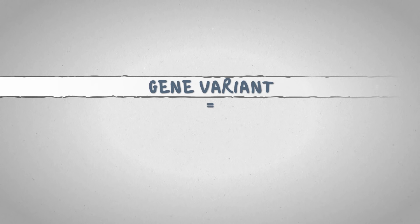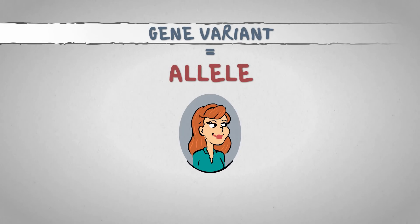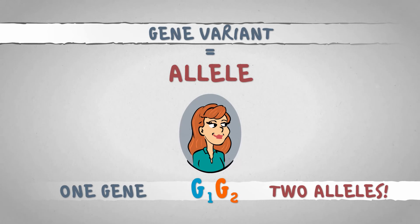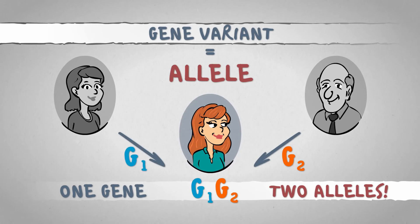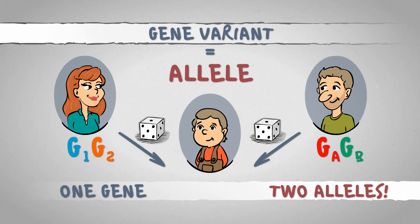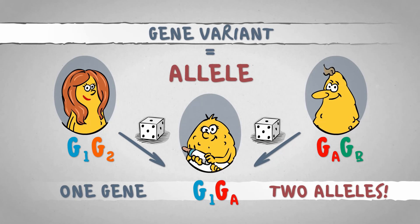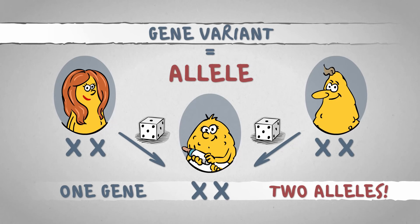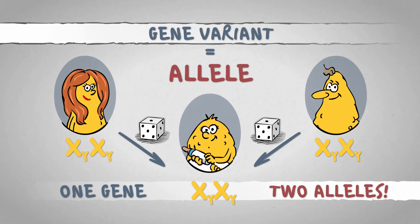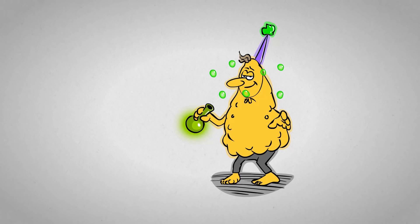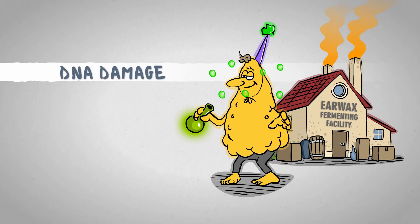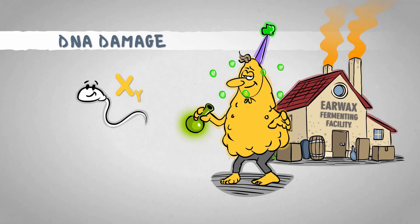Variants of the same gene are called alleles in genetics, and most multicellular life forms carry two alleles of each gene in their genomes — one from the father and one from the mother. When they reproduce, they randomly pass one allele onto their offspring within their gametes. This is no different in LORPs, but the yellow individuals carry two of the same X-allele, namely the LORP-melanine producing yellow variant. Booger LORP's dad, however, had a wild New Year's party in his buddy's earwax fermenting facility where he drank from a bottle labeled "Don't drink this," and consequently one of his sperm cell's yellow X gene mutated into the blue X-allele.